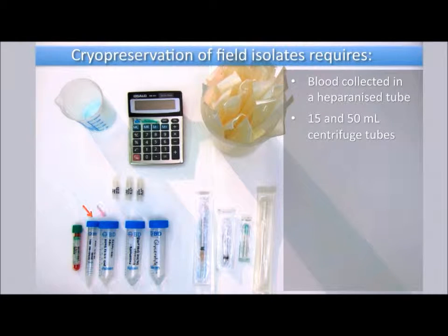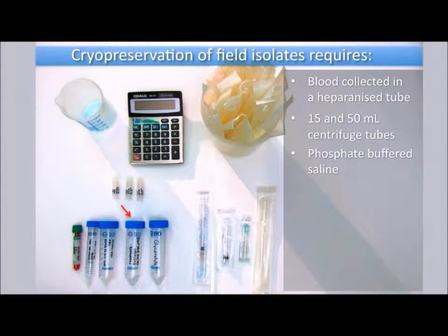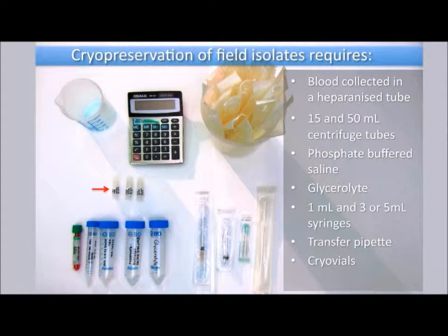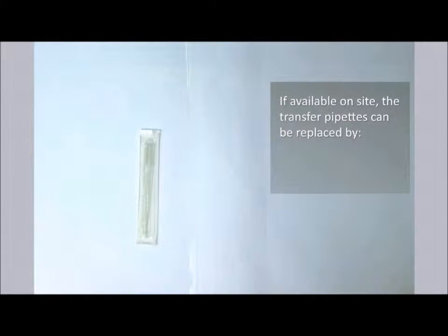You will need a 15 and a 50 ml centrifuge tubes, phosphate buffered saline, glycerolite, a 1 ml syringe, a 3 or 5 ml syringe, transfer pipettes, screw cap cryovials with internal threads, and you will also need a calculator to determine the volume of glycerolite to be added to packed red cells.